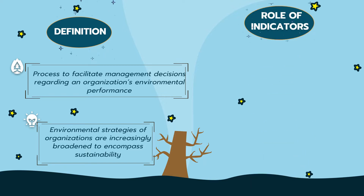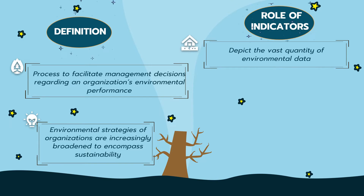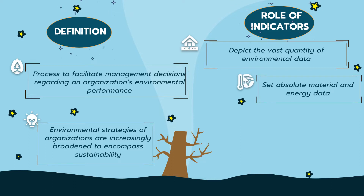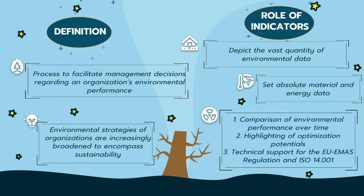Role of Indicators. Indicators are used to depict the vast quantity of environmental data of a firm in a comprehensive and concise manner. They are mostly applied to set absolute material and energy data in relation to other variables to increase the informational value of quantitative data. Environmental indicators have the following purposes: 1. Comparison of environmental performance over time. 2. Highlighting of optimization potentials. 3. Technical support for the EU-EMAS regulation and ISO 14001.